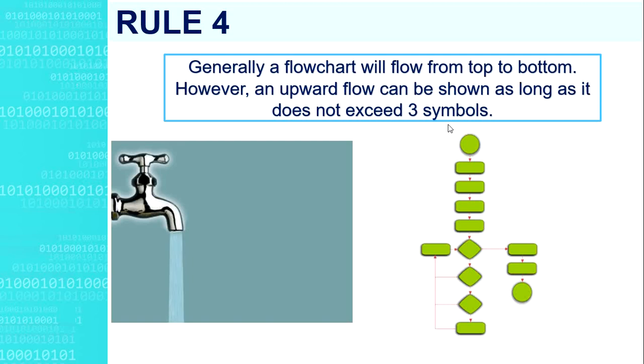Rule number four. Generally, a flowchart will flow from top to bottom, just like the flow of water. However, an upward flow can be shown as long as it does not exceed three symbols.